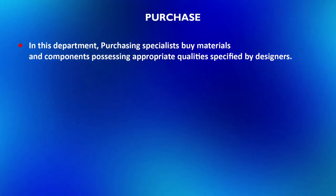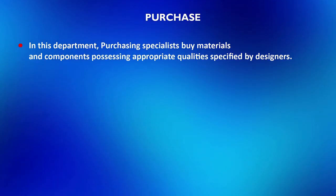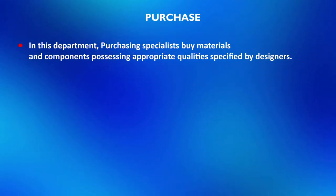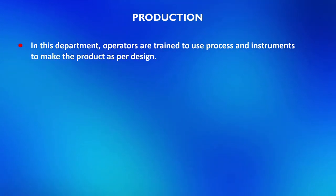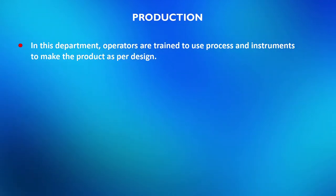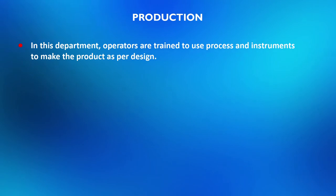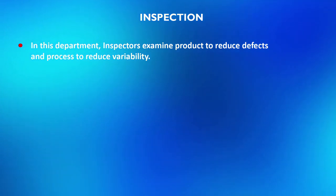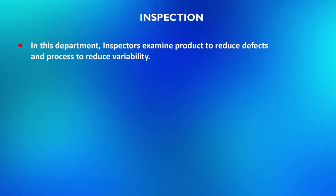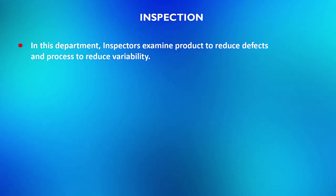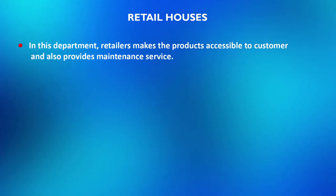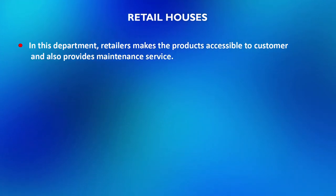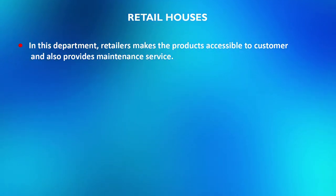In the purchase department, purchasing specialists buy materials and components possessing appropriate qualities specified by designers. In production, operators are trained to use processes and instruments to make the product as per design. Inspectors examine products to reduce defects and monitor processes to reduce variability. In retail houses, retailers make products accessible to customers and also provide maintenance service.